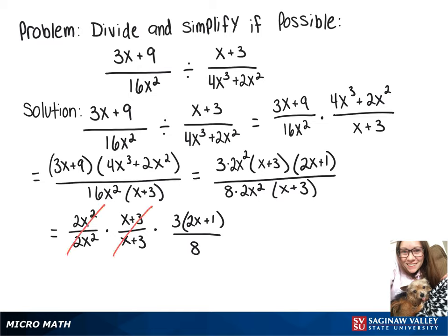And now these parts will cancel out and then if we distribute that 3 we're left with 6x plus 3 over 8.